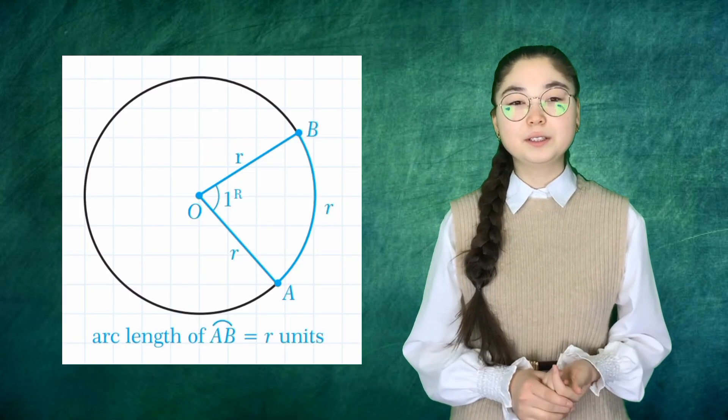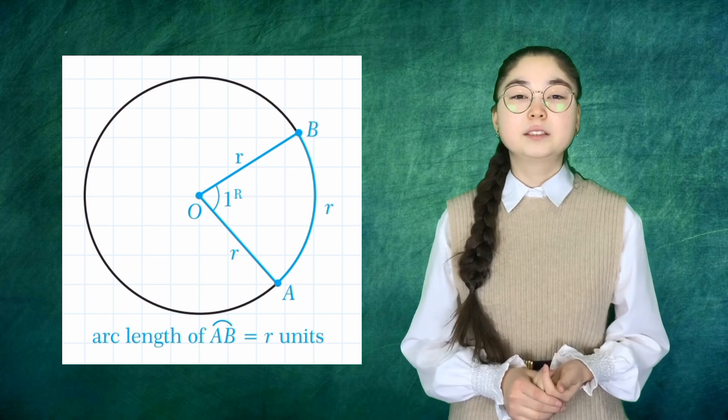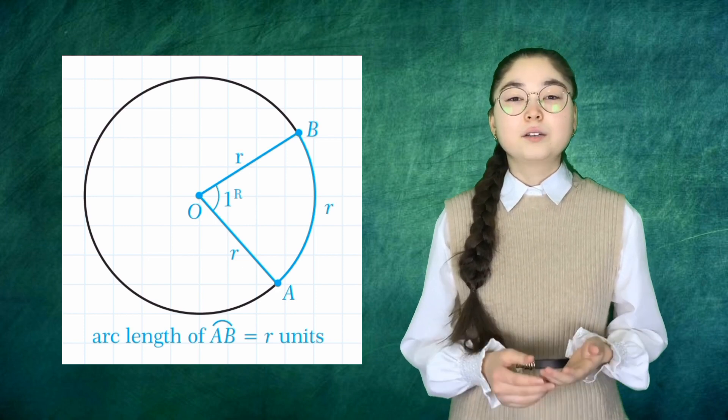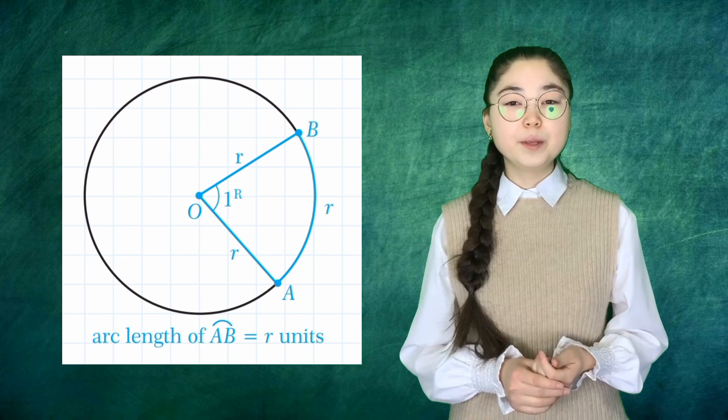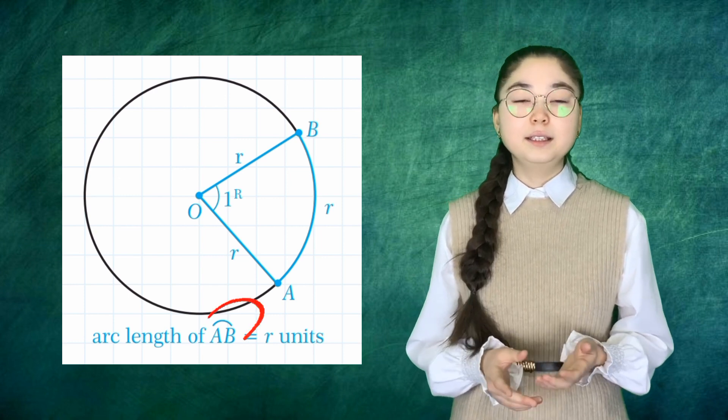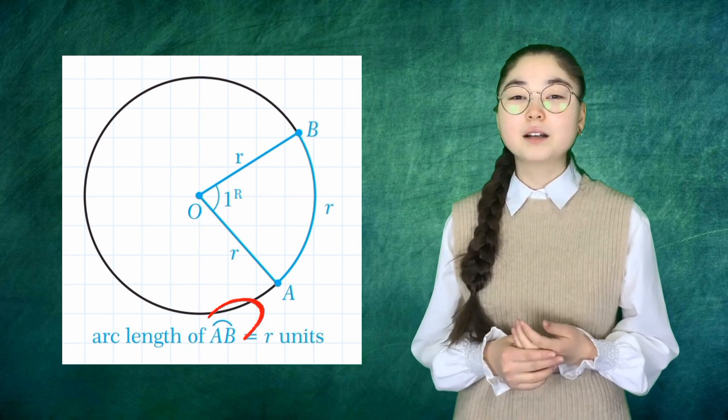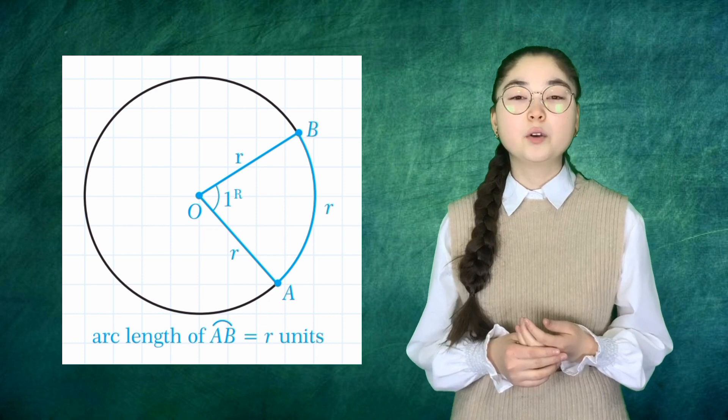The segment of a circle between the two sides of an angle AOB is called the arc corresponding to angle AOB. We write like this to mean the arc corresponding to angle AOB.